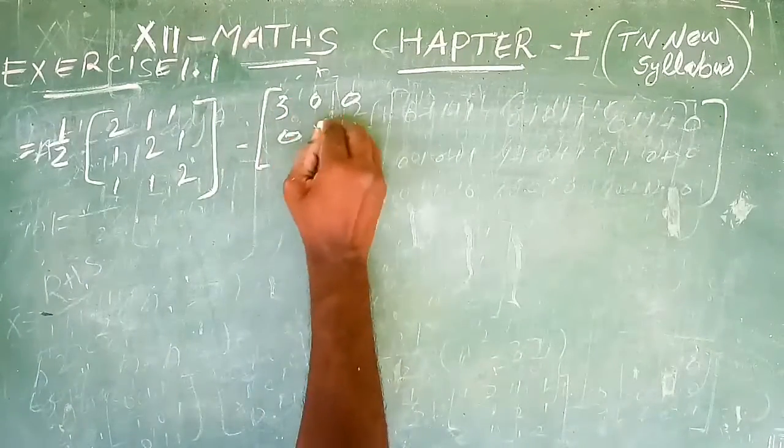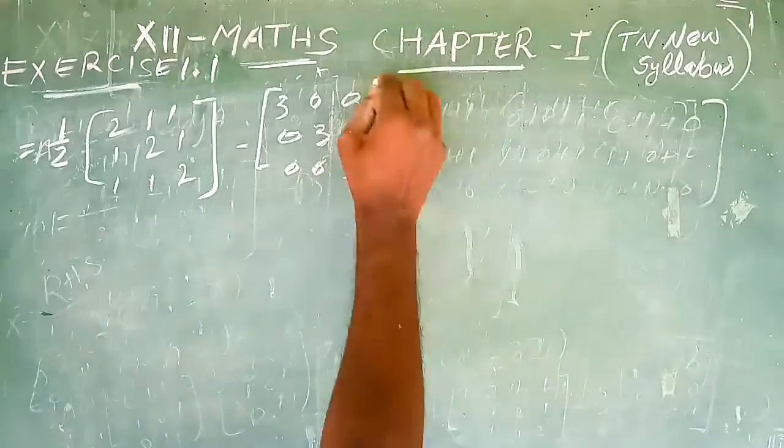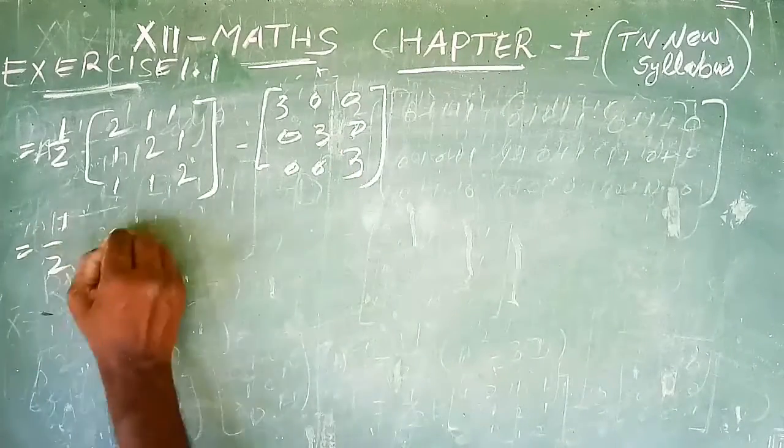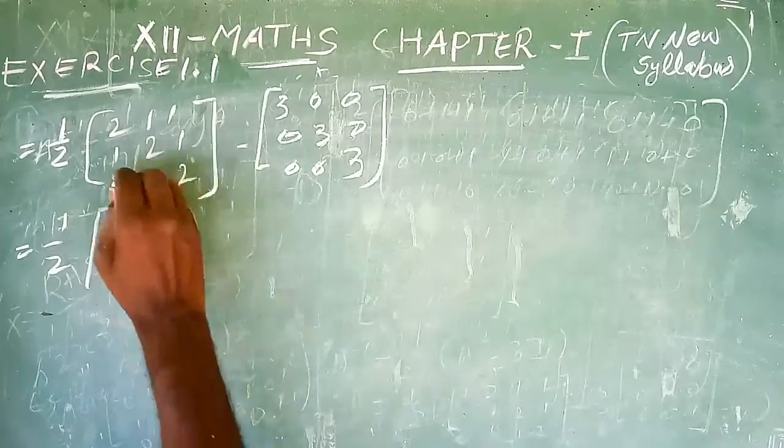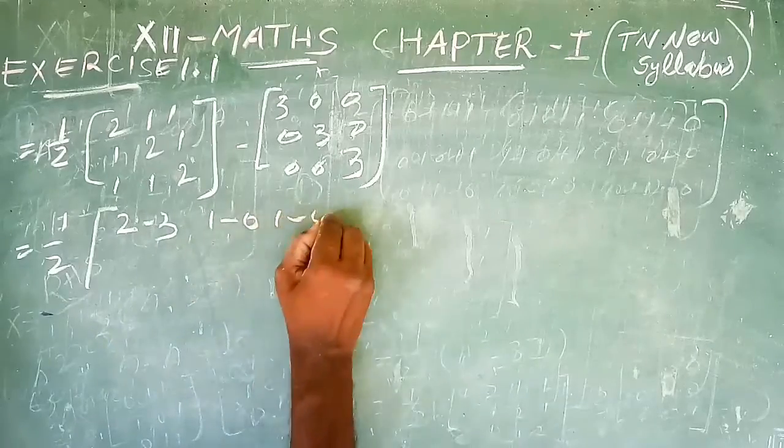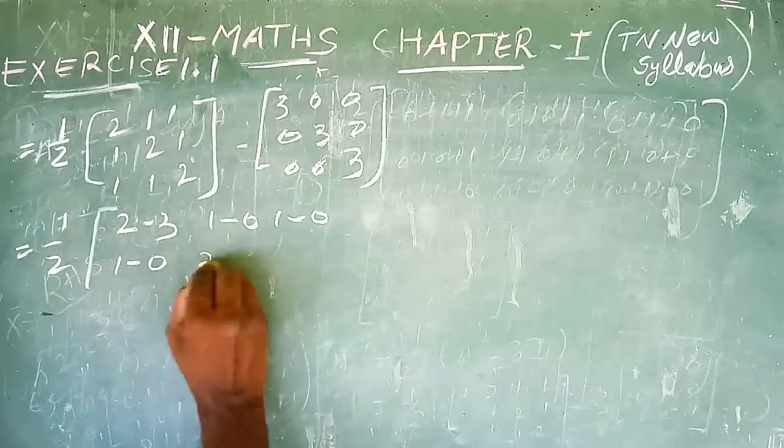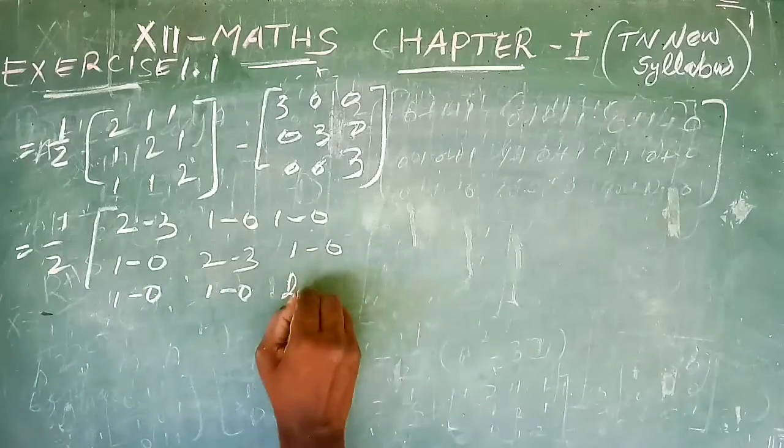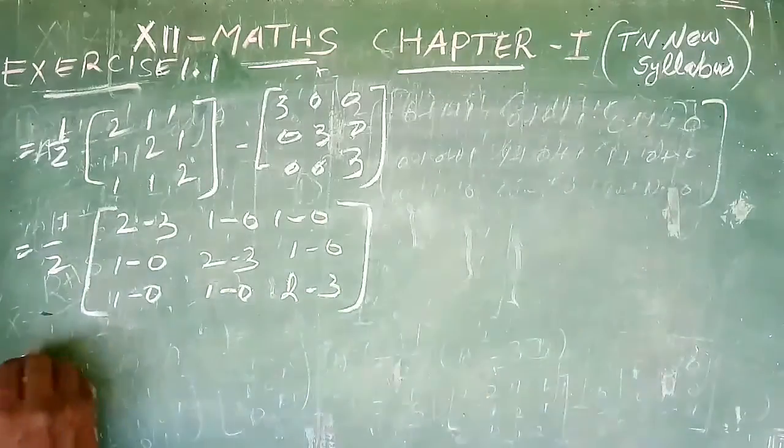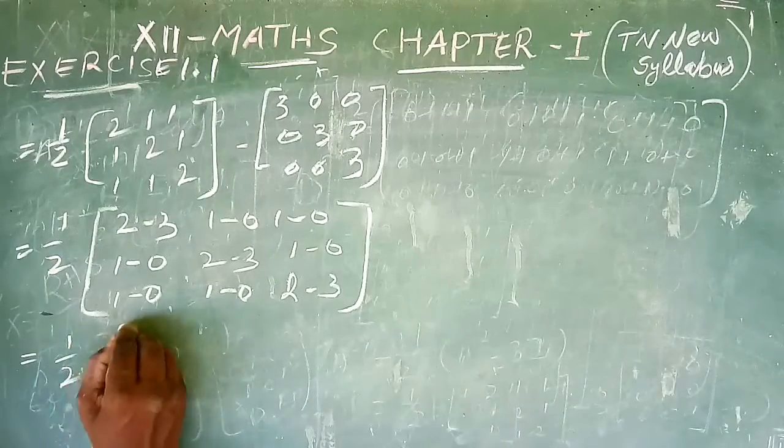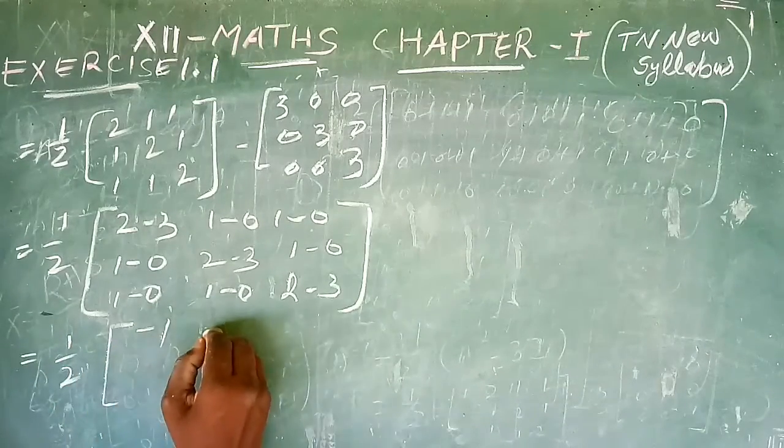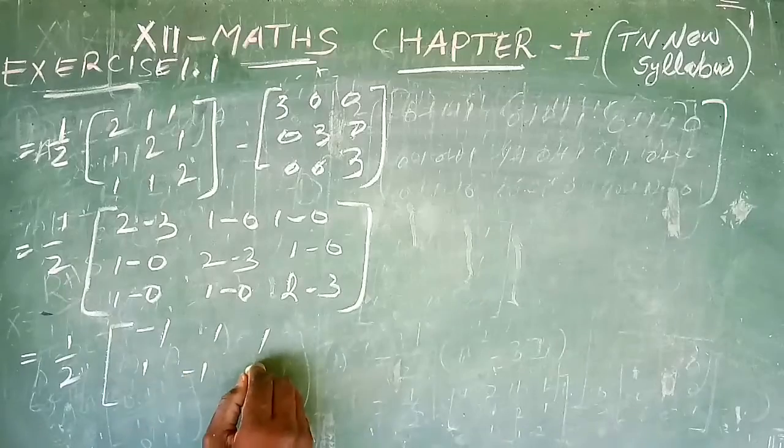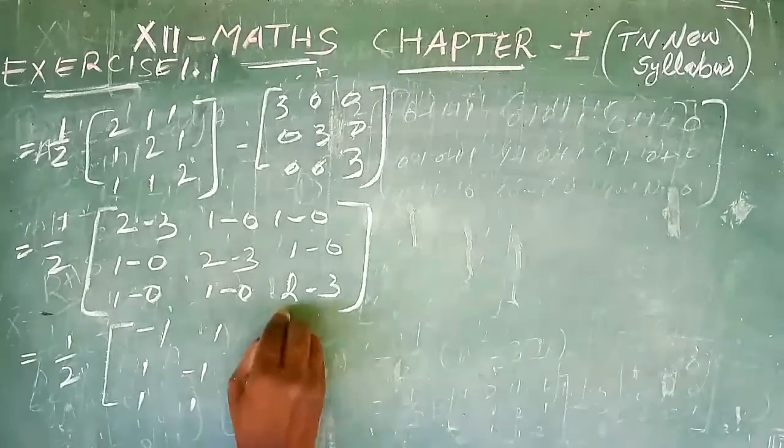Simplifying: [[2, 1, 1], [1, 2, 1], [1, 1, 2]] minus [[3, 0, 0], [0, 3, 0], [0, 0, 3]] equals [[−1, 1, 1], [1, −1, 1], [1, 1, −1]]. Then multiply by 1/2.